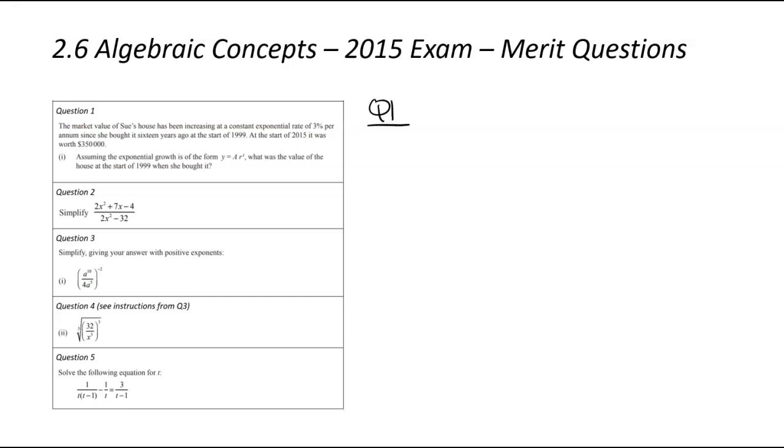So let's get into question number one. And question number one, the market value of Sue's house is increasing at a constant exponential rate and that makes sense because we've got an exponential equation below.